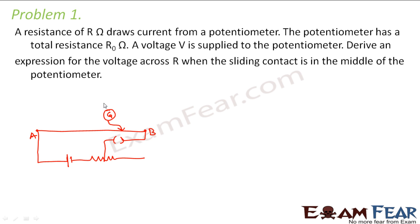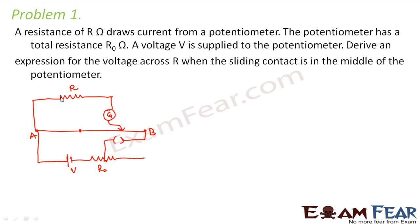This is the galvanometer. So this is my potentiometer. A resistance of R ohms is connected to the potentiometer. The potentiometer has a total resistance of R0 ohms. A voltage V is supplied to the potentiometer by the battery. We need to derive an expression for the voltage across R when the sliding contact is exactly at the middle of the potentiometer.